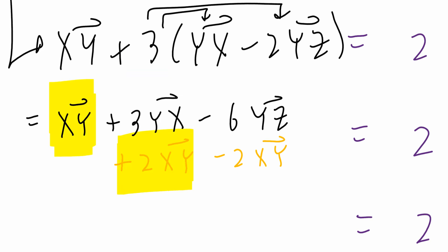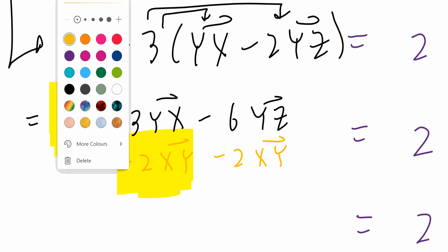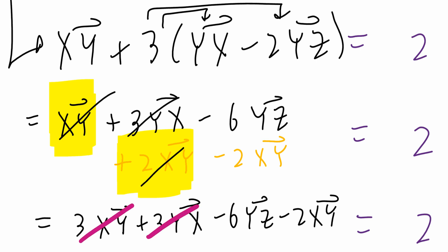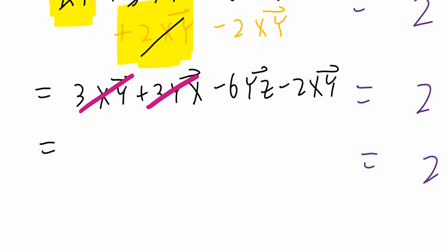Now look what happens. The first and the fourth term, when I combine them, this equals to 1 plus 2. That's going to be 3XY plus 3YX. I can cross these out. Minus 6YZ minus 2XY. So again, since XY and YX, these are opposite vectors, you can cross them out. This means you're left with negative 6 times vector YZ minus 2 times vector XY.